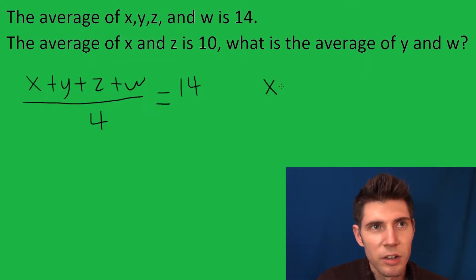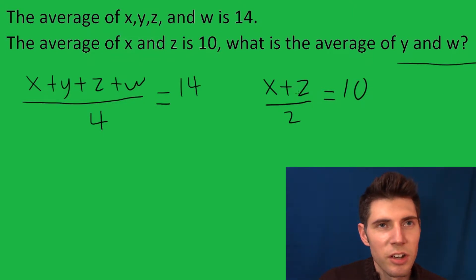And we also have the average of x and z is 10, so that would be x plus z divided by 2 equals 10. And we want to know what is the average of y and w. So we'll get there in a minute. First, let's solve for x plus z.